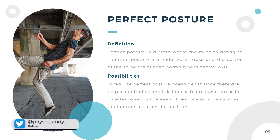So what would a perfect posture look like? Perfect posture is a state where the muscles acting to maintain posture are under zero stress and the curves of the spine are aligned normally with the central axis. Simply put, it is a state where all the body segments are vertically aligned with your line of gravity — which seems impossible, right?